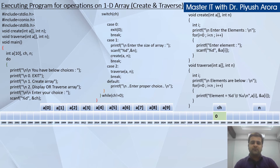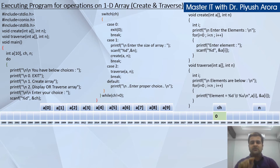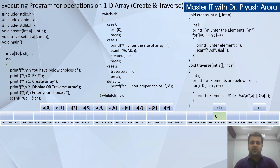Suppose the user enters 0 at the start. Switch(0) will match case 0, and the program will exit. It is not practical to enter 0 at the start, but we show this so you understand that when we enter choice 0, the program comes out. When the program exits, it will execute again from the beginning — int A[10], choice, and n are re-declared.